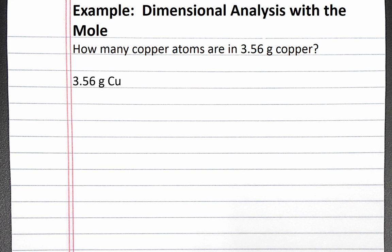We'll start our dimensional analysis with 3.56 grams of copper. From the periodic table, the atomic mass of copper is 63.55 atomic mass units, so copper's molar mass is 63.55 grams per mole.